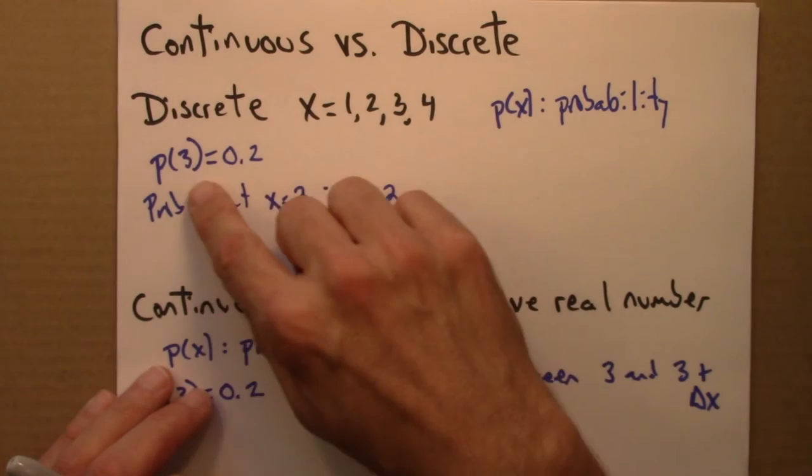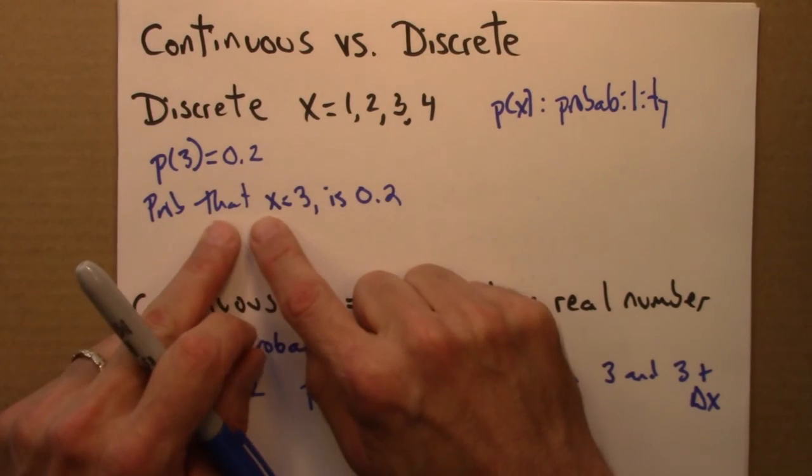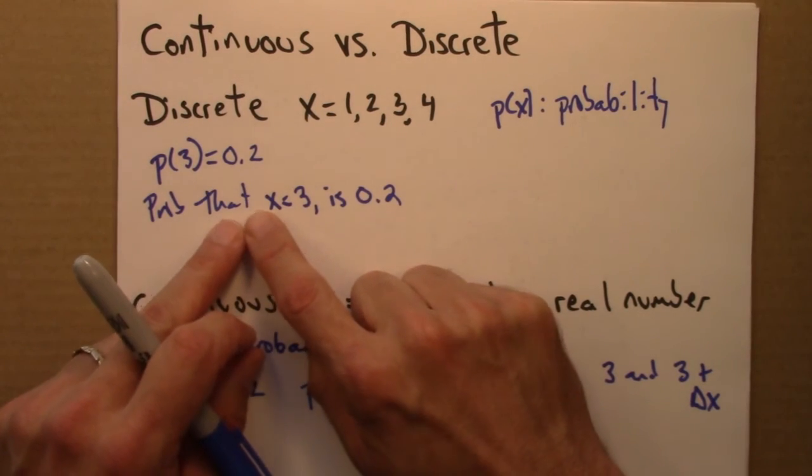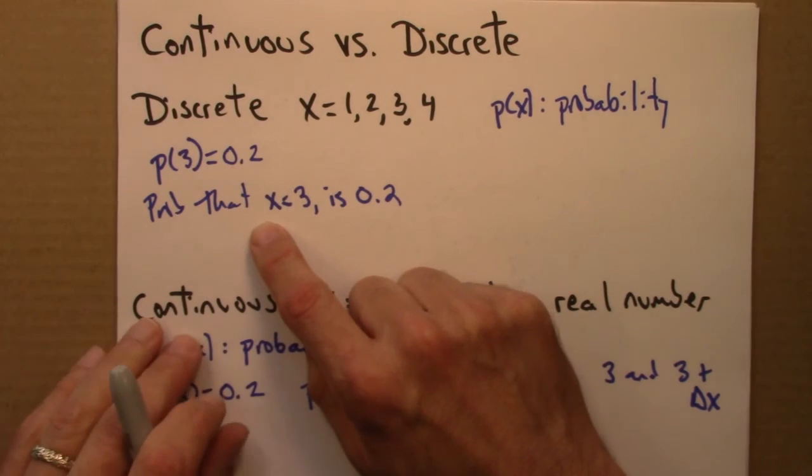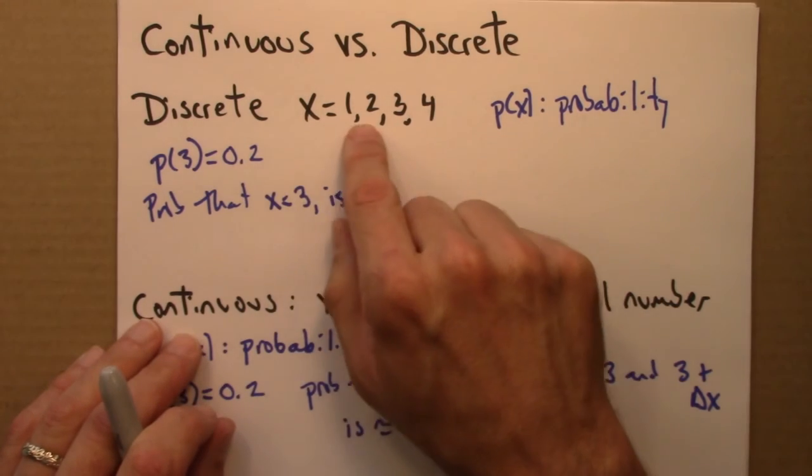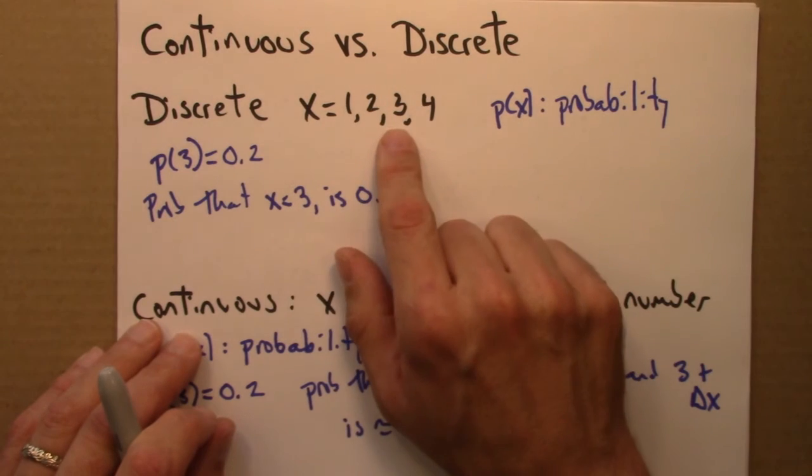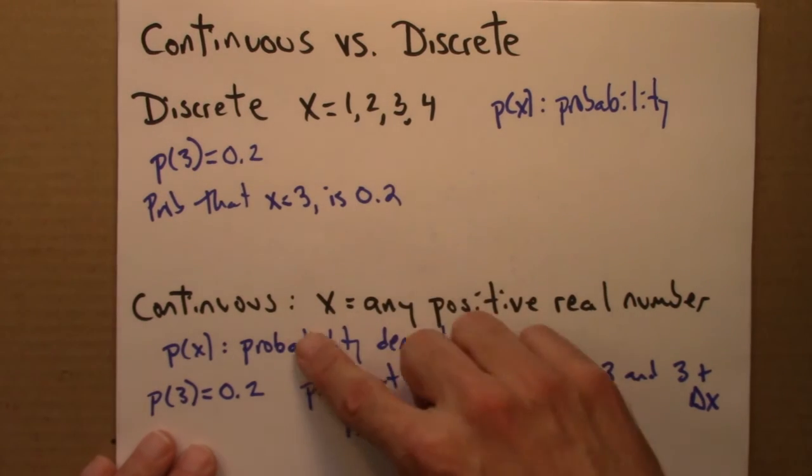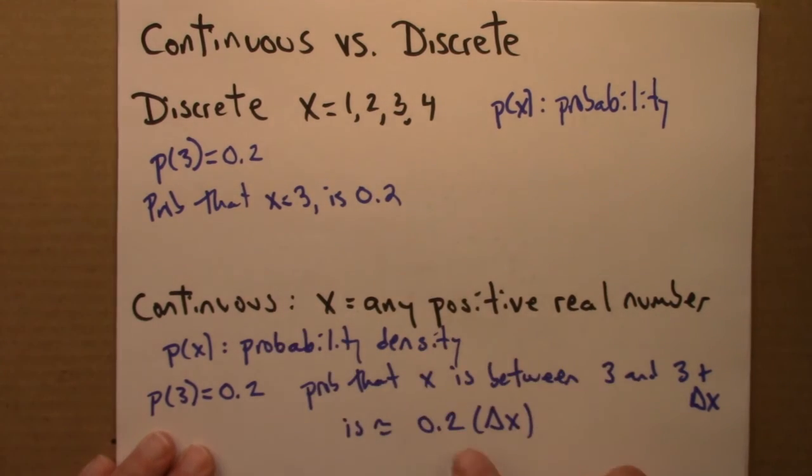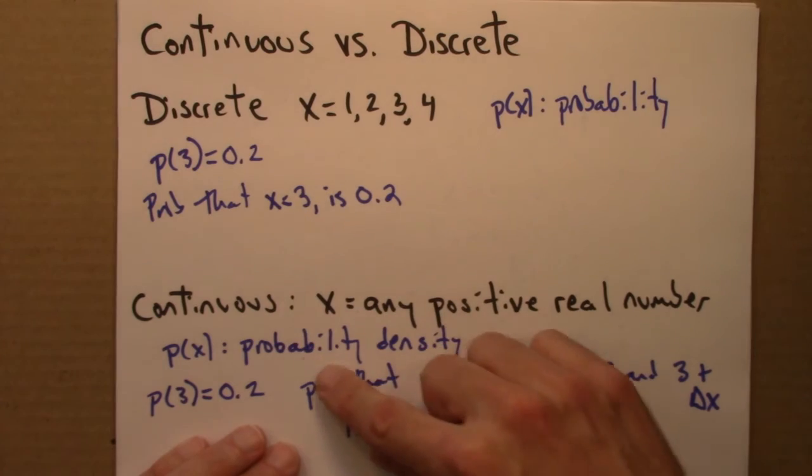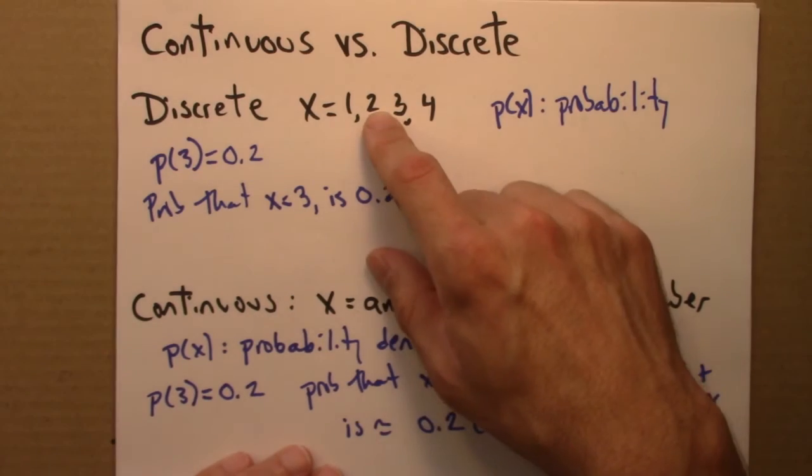Interestingly, to me at least, discrete I think is much cleaner conceptually, but is actually sometimes harder to work with mathematically because one is having to do sums, which can be difficult to evaluate. Continuous situations, which are trickier conceptually perhaps, can sometimes be easier to deal with because one can work with integrals instead of sums.